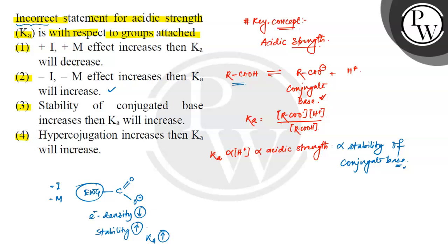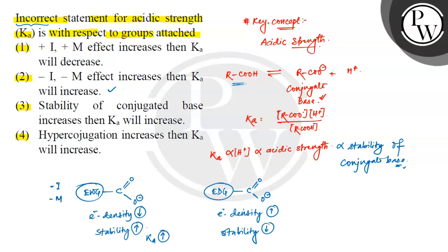Now, if you attach an electron donating group (EDG) to the carboxylate group, it releases electrons and increases the electron density on the carboxylate group. If the electron density increases, the stability of the conjugate base decreases, because the minus charge is not dispersed. And if stability decreases, the value of Ka will decrease — since Ka is directly proportional to the stability of the conjugate base.